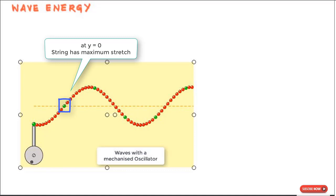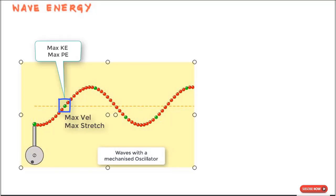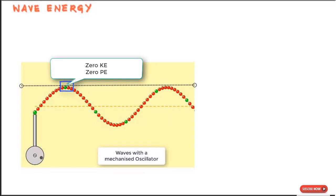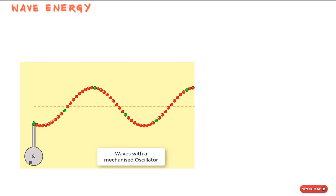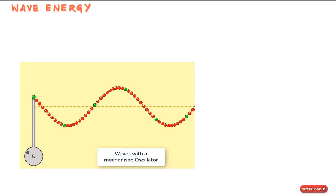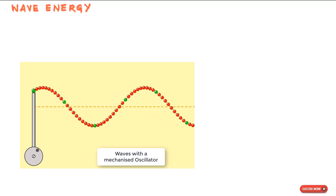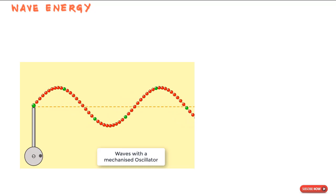This brings us to energy transport. At y = 0, an oscillating string element has both maximum kinetic energy and maximum elastic potential energy. At maximum displacement, there is no energy — the string is not stretched and its velocity is zero. As the wave moves along the string, forces in the form of tension continuously do work to transfer energy from areas with energy to adjacent areas with no energy.